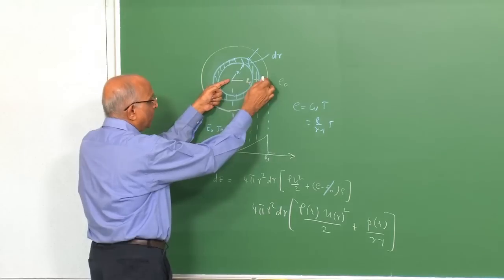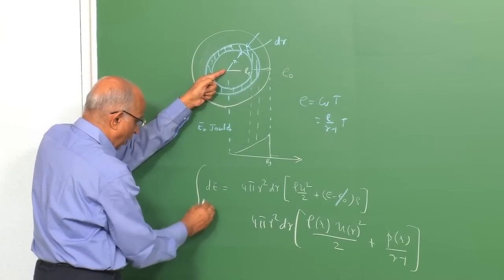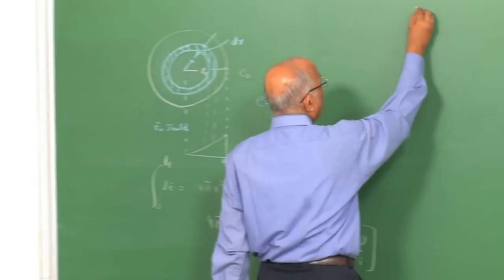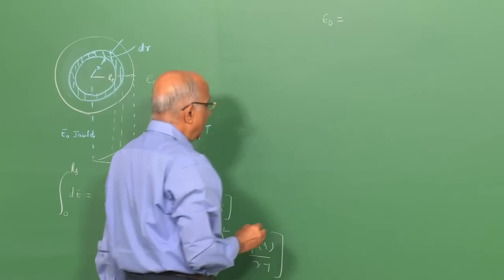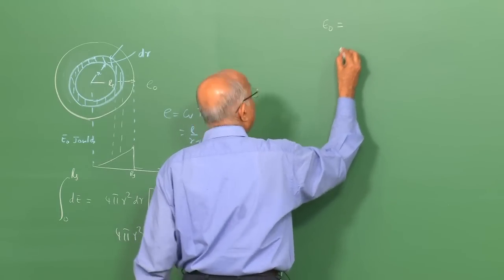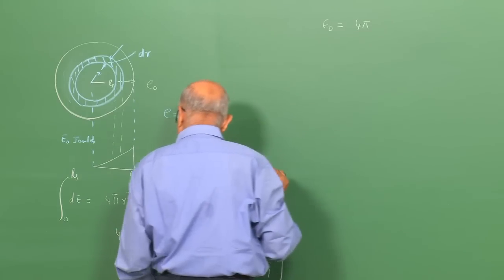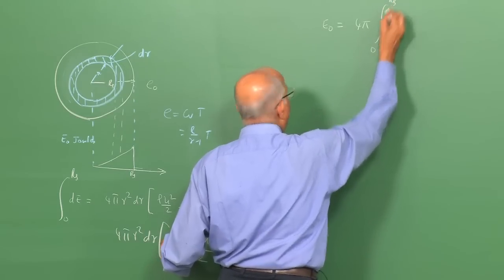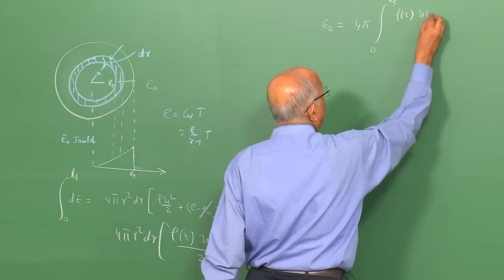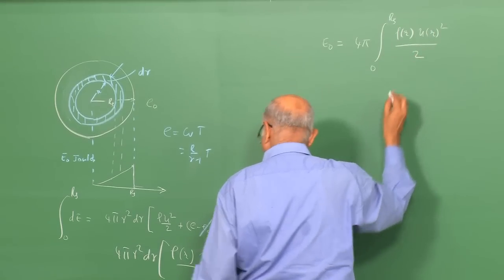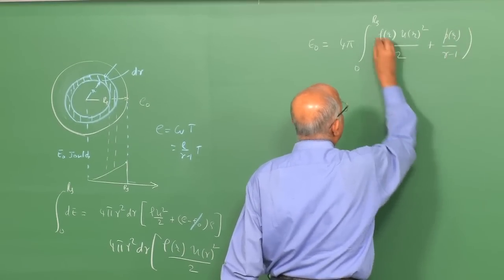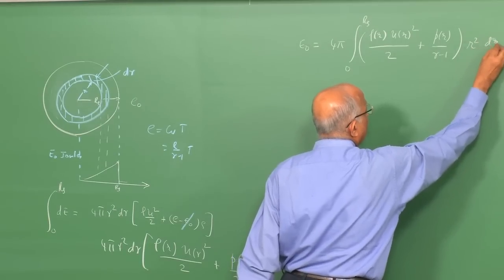We integrate the total energy from 0 to Rs, and the expression we get is: E₀ = 4π · ∫₀^Rs [ρ(R)·u(R)²/2 + P(R)/(γ−1)] · R² dR. This is the energy balance expression for the blast wave.